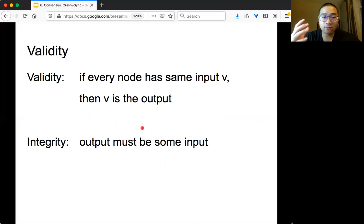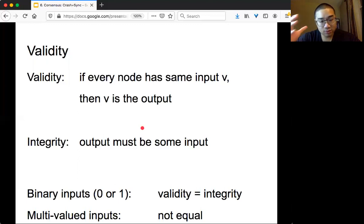There are many different forms of the validity property. One of the most intuitive is that if every node has the same input v, then the only possible output is v. The other one is called integrity, meaning that your output must be some input value proposed by some node. If your input is binary (0 or 1), then validity equals integrity. But if your input can take two, three, or more values, then they are not equal. That's an exercise for you - try to figure out what's the difference between the two.